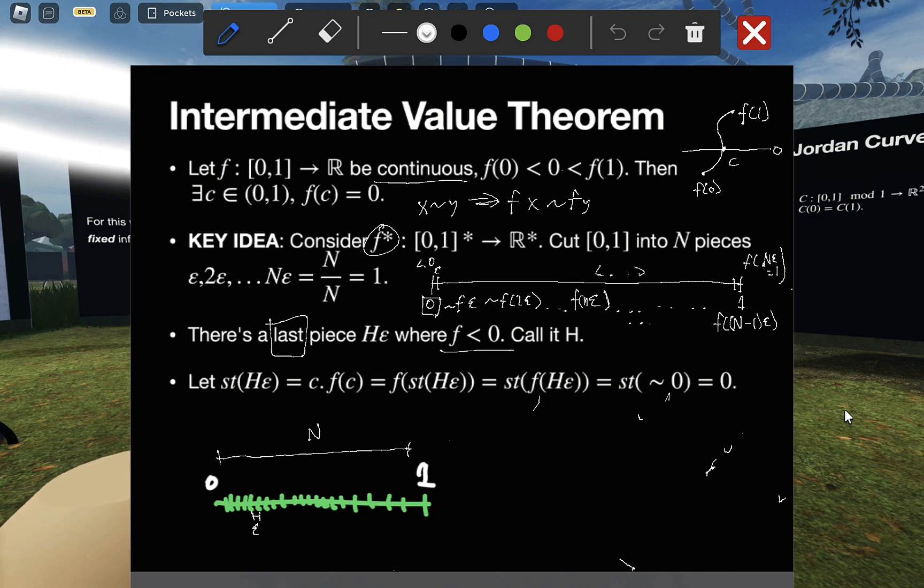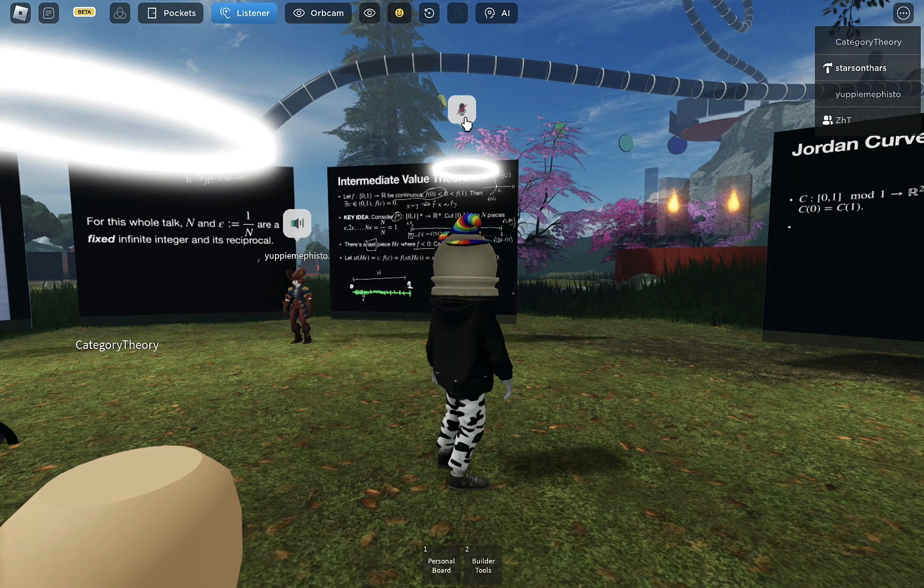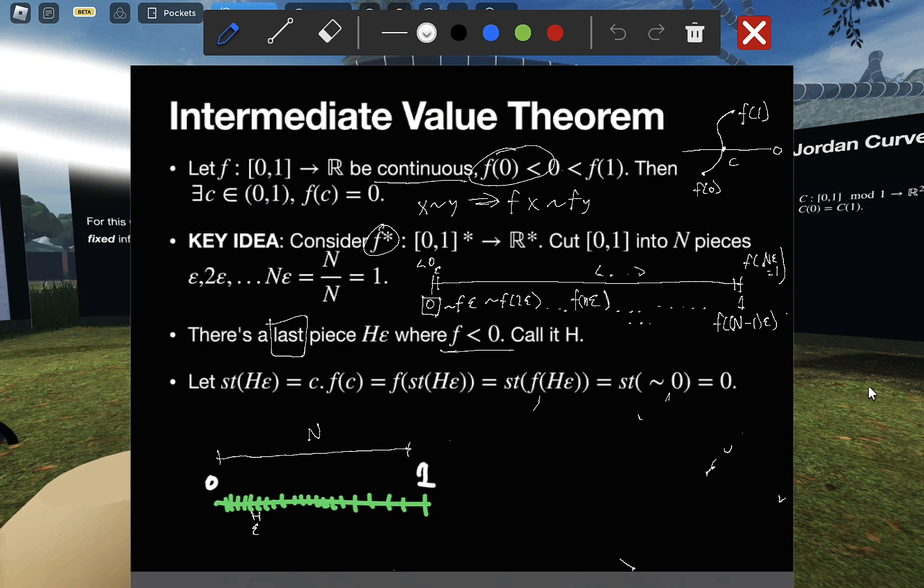Because the function is less than zero, it started out less than zero by assumption. And it's not zero at the end, it's f of one, which is given to be strictly greater than zero. But this last time where it's less than zero, we call it h. And now this is the piece we want, this is the point that will be at zero.